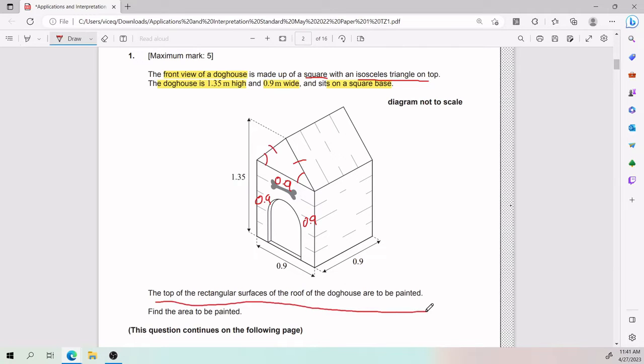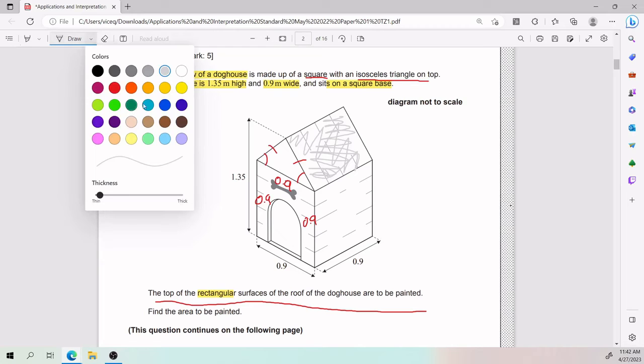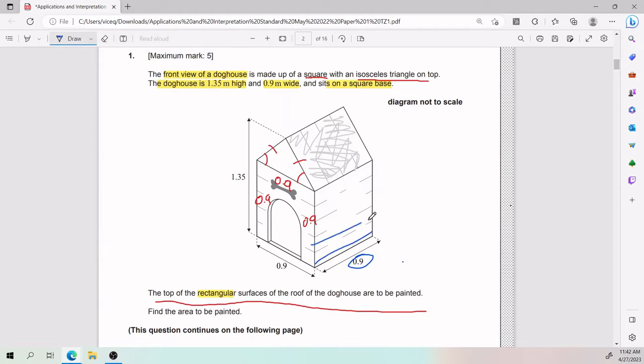All right, the top of the rectangular surfaces of the roof of the doghouse are to be painted. All right, that is another hint, because rectangular surface. So that tells me that what you're trying to paint, which is this guy right here, is a rectangle. Ah, interesting. And so, what do I know about this rectangle? Well, I already know one thing. I know that this side here, 0.9, is also up here. I also have a 0.9 right there. So what is the height? Once I have the height, I'm going to have all dimensions of my rectangle, and I can find the area to be painted, right?